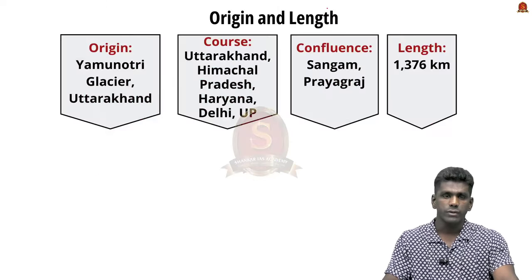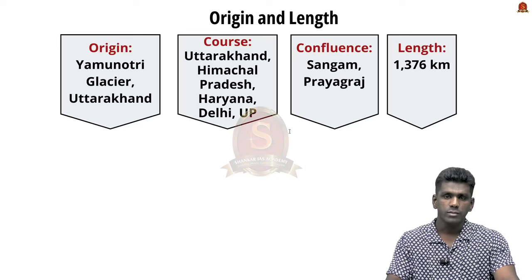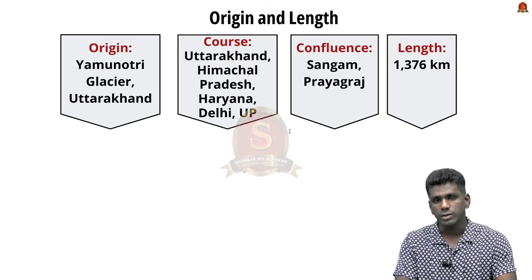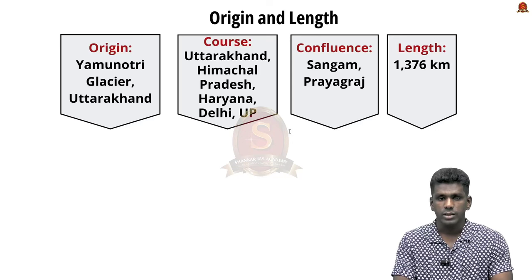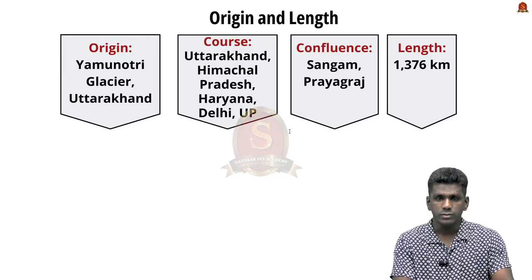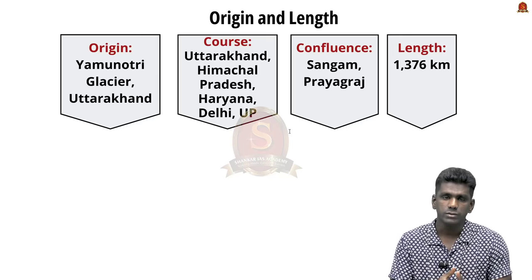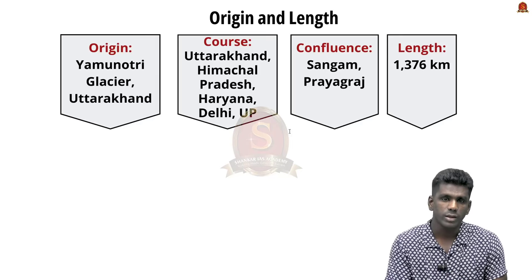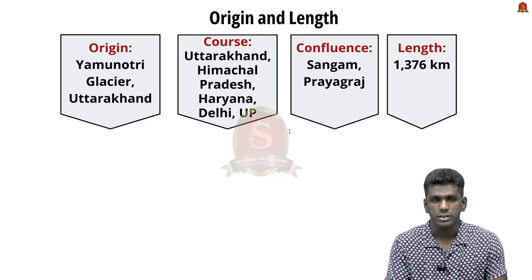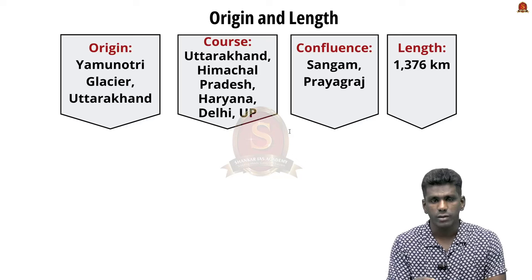Let us start with the basics of Yamuna River. Yamuna River is a major tributary of the Ganges. This Yamuna River originates from Yamunotri Glacier, which is present near Bandar Punch Peak in Musauri Range. This Musauri Range is part of the lower range of Himalayas, located in Uttarkashi District in Uttarakhand. From this district, the Yamuna River originates, particularly from the Yamunotri Glacier.